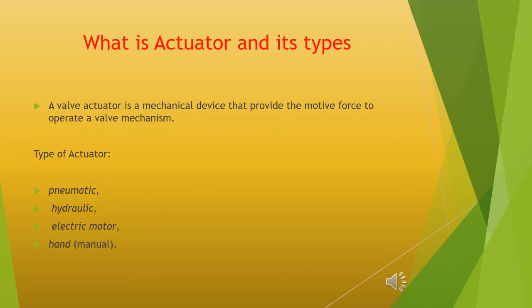What is an actuator and its types? A valve actuator is a mechanical device that provides the motive force to operate a valve mechanism. Types of actuators include: pneumatic, hydraulic, electric motor, and hand/manual. Pneumatically operated control valve actuators are the most popular type in use, but electric, hydraulic, and manual actuators are also widely used.